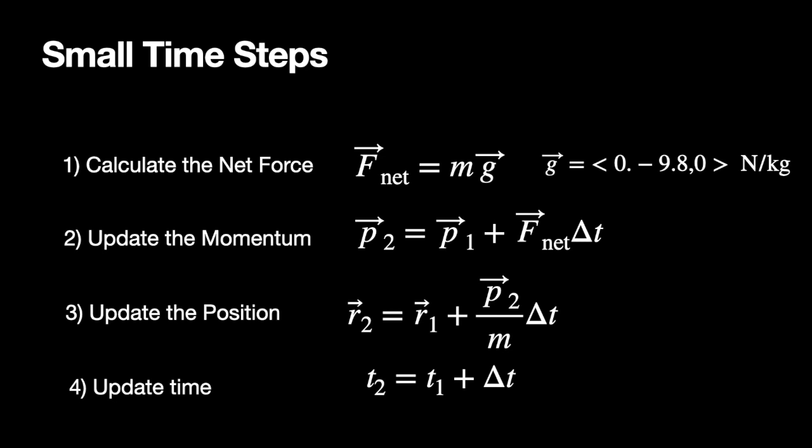Number three, update the position. This is not legit. This is where I cheated, okay? Because this comes from the definition of the average velocity. So P2 over M is not the average velocity. But if my time interval is small, this mostly works, okay? And it did work. I showed you that video. We did it already. And then I update time, and then I repeat these processes until I want to stop. This is the idea of a numerical calculation. And we did that for projectile motion.